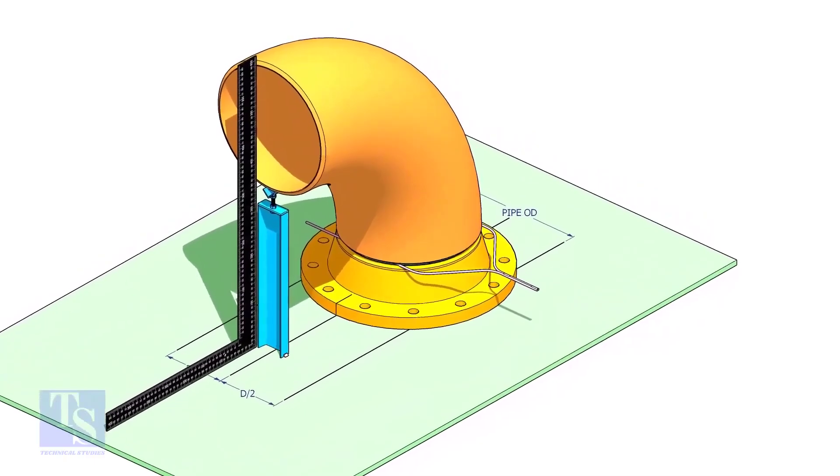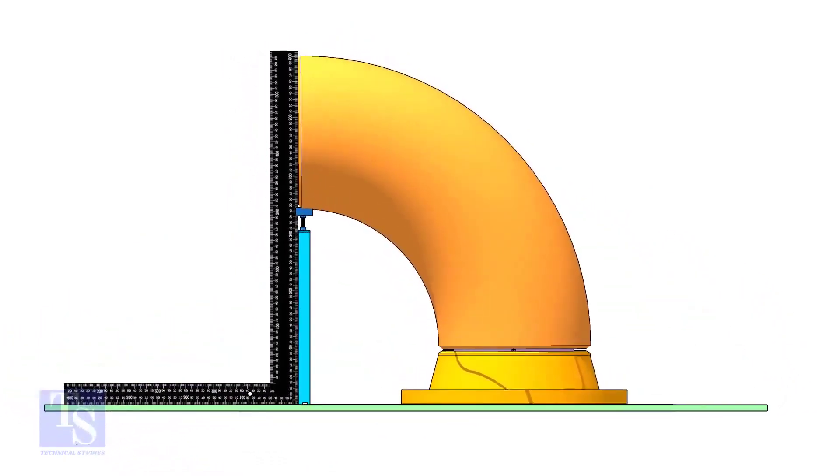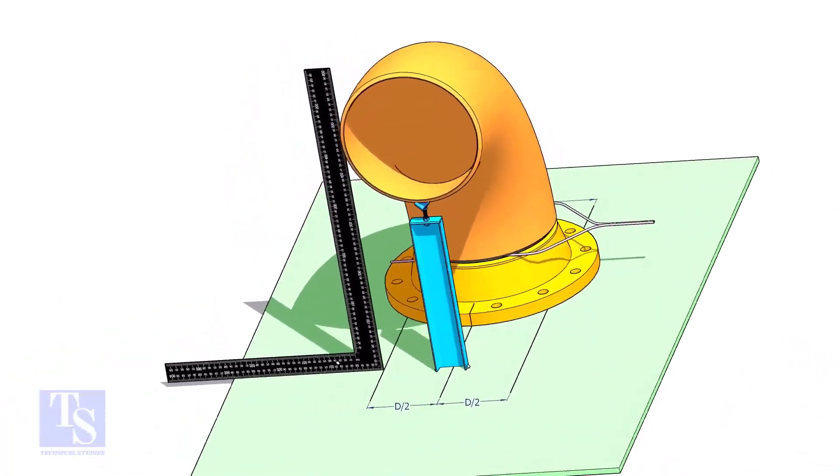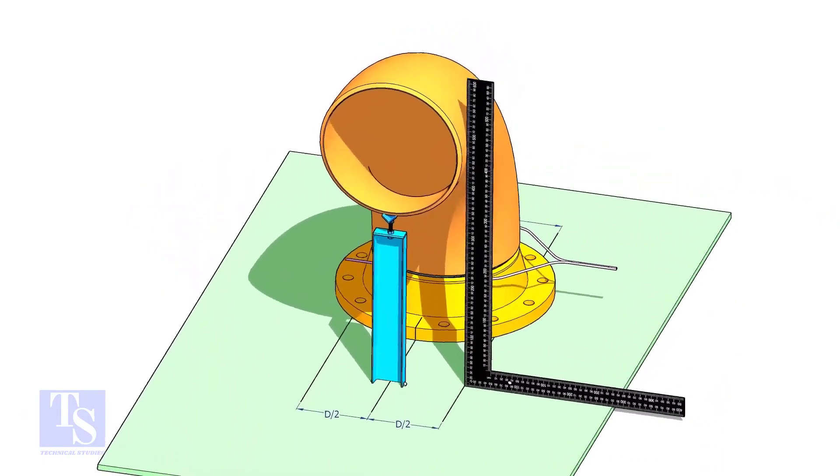Make the squareness of the elbow to the plate. The straightness of the plate is a must. Make sure the face of the elbow and the lines are parallel.